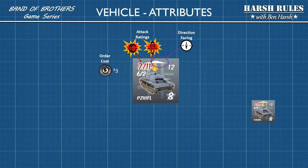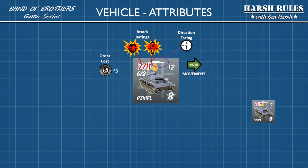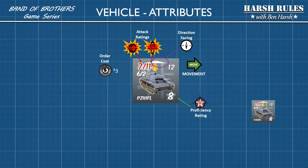Vehicles have a facing direction that shows their angle on the field and determines their arc of fire. Movement shows the number of hexes the vehicle can move in a turn. The proficiency rating is the number you must roll beneath to perform a difficult task. This attribute shows the unit type, which is a Panzer III FL.